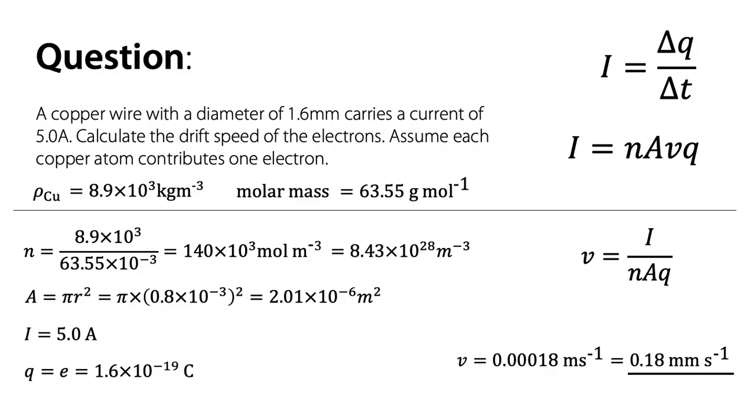And if we made the cross-sectional area larger, thicker wire, for the same current, that velocity will actually get even slower. So when you turn the lights on, when you hit the switch and the lights turn on instantly, the actual electrons are only moving through that wire very slowly indeed.